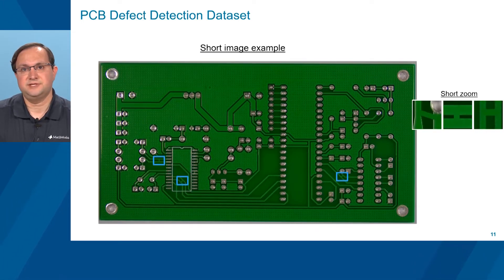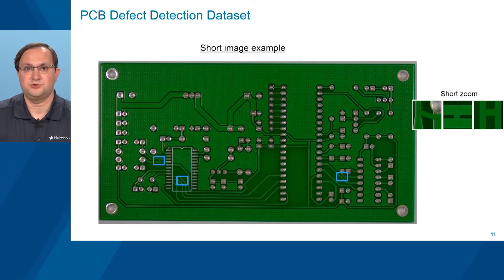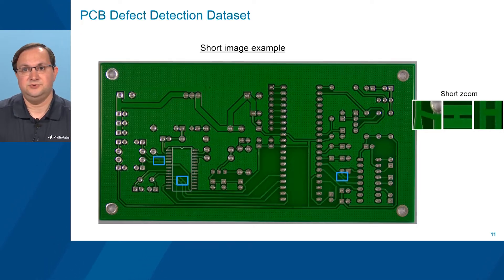The dataset's fourth defect class is short, which establishes an undesired electrical connection between two or more circuit elements on the PCB. You can see several examples of short ROIs annotated in blue.